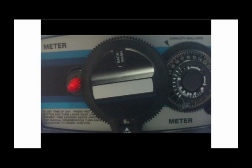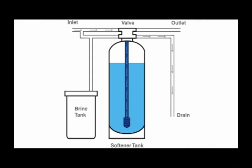This process begins with the backwash cycle. This cycle involves the flow of water down the center tube, upsetting the resin and forcing it to the top of the tank.